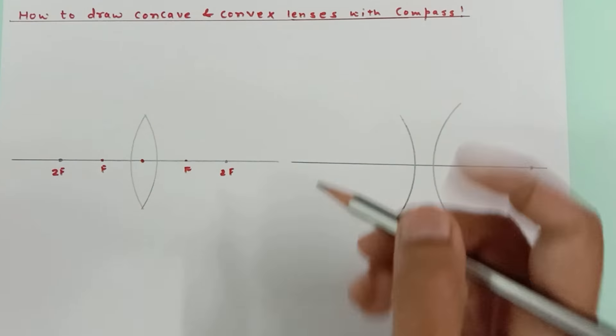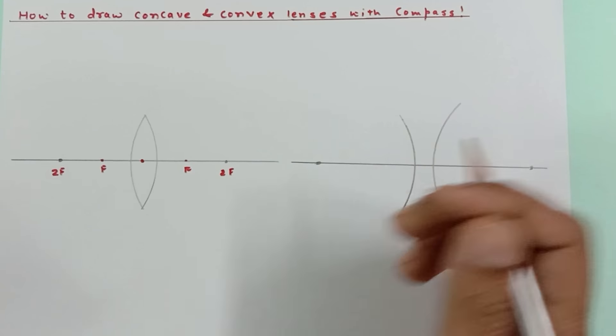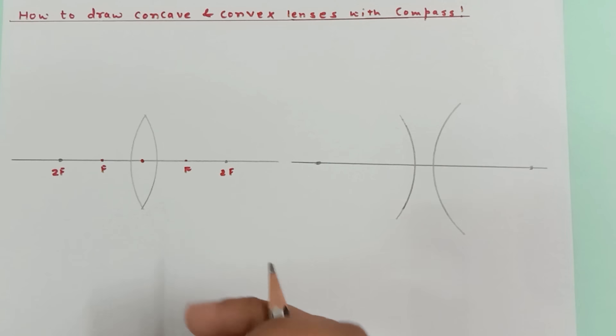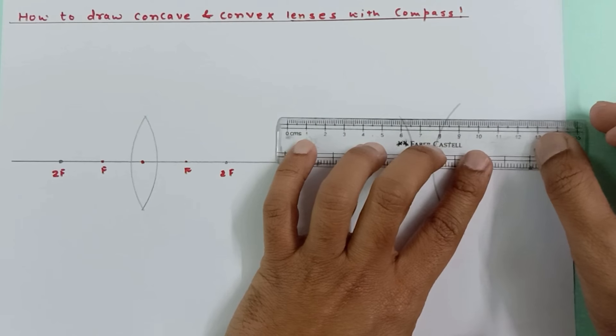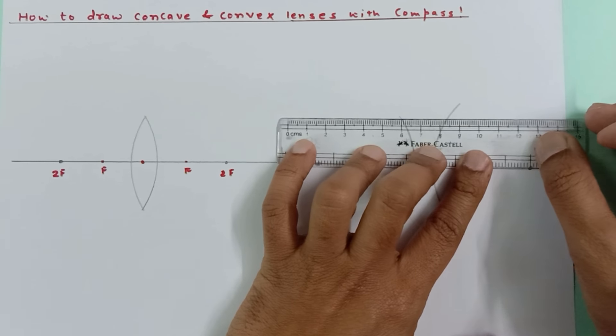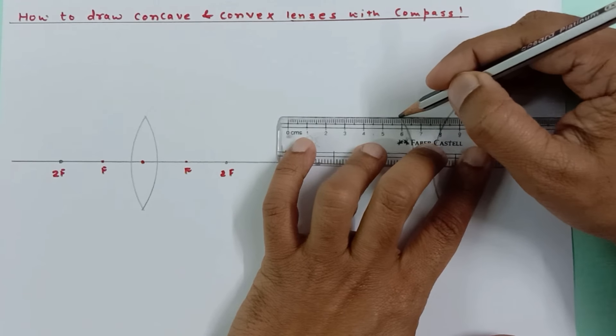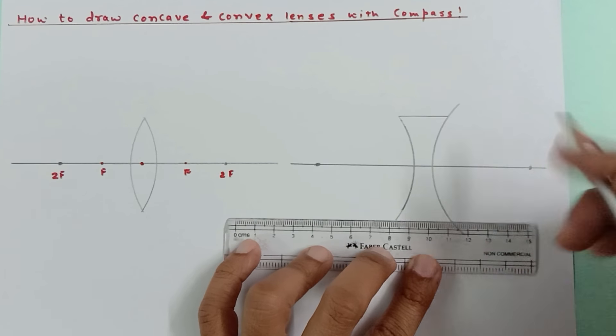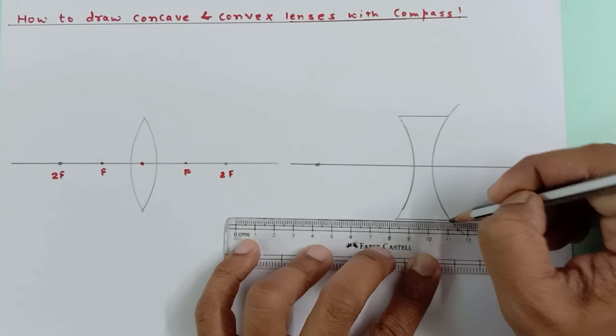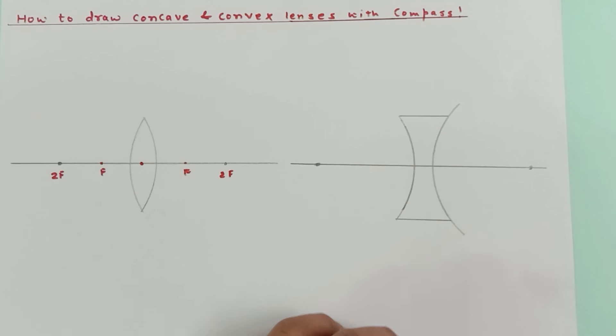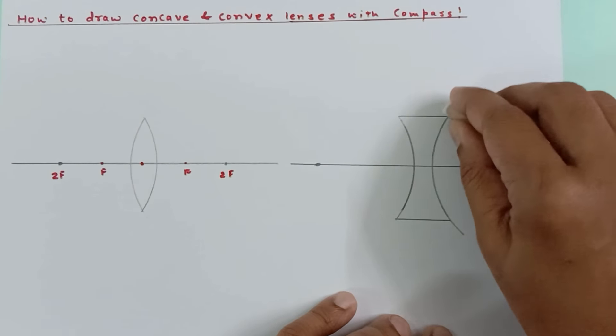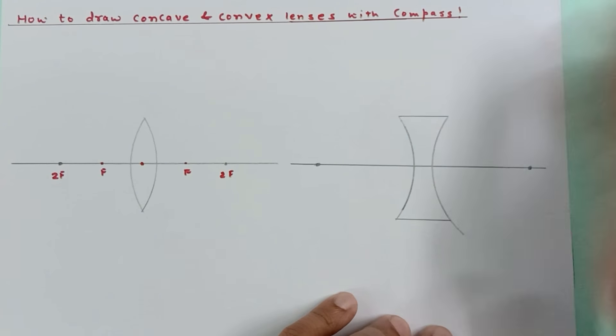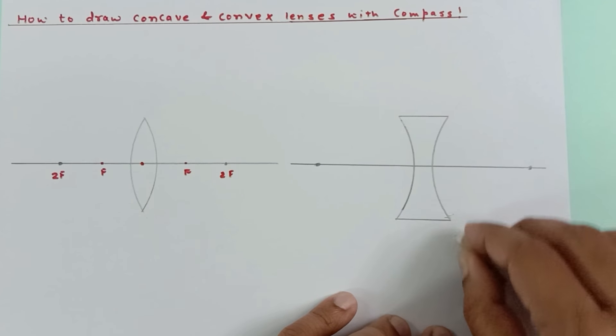And now I'm going to mark this point. Now from here, just draw a straight line like this. And you have to rub these two portions so that the concave lens is perfectly ready.